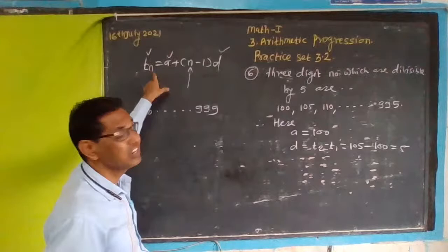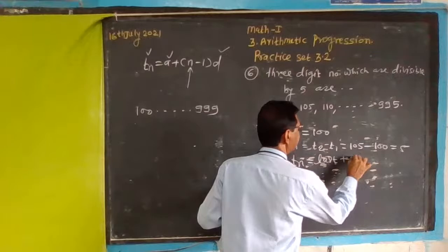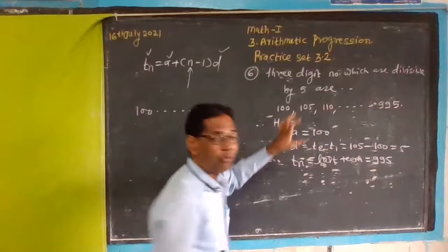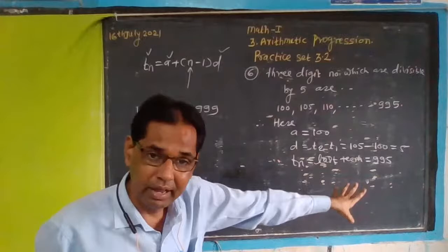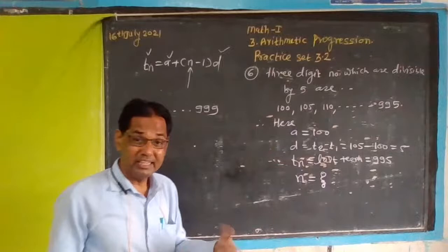The difference is 5. The tn, the nth term or last term, is 995 for this particular condition. Now we need to find out n, the number of terms.